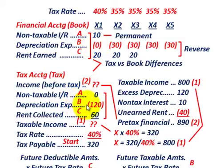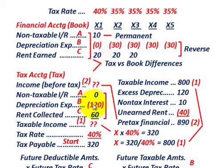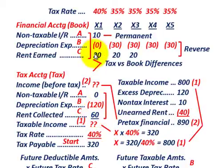Next we have depreciation expense. We're going to have $120,000 extra depreciation for tax accounting over our book accounting. This $120,000 is going to reverse itself for book accounting purposes over each of the next four years — we're going to recognize $30,000 each of the next four years, but nothing in the first year for our book accounting. The next item is rent collected: we collect $60,000 of rent recognized entirely for tax accounting in the first year, but for book accounting the rent is earned $20,000 in the first year and $20,000 in each of the next two years.